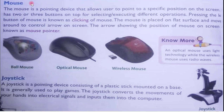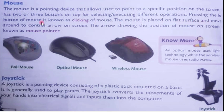Second is the mouse — the most common pointing input device. The mouse allows the user to point to a specific position on the screen. It has two or three buttons on top for selecting or executing different operations. Present-day mice have three buttons: left click, right click, and a scroll wheel in the center to move pages up and down. Pressing the left button of the mouse is known as clicking.